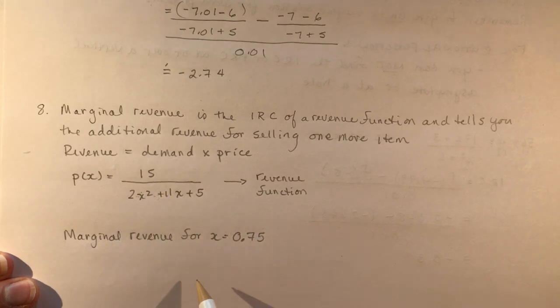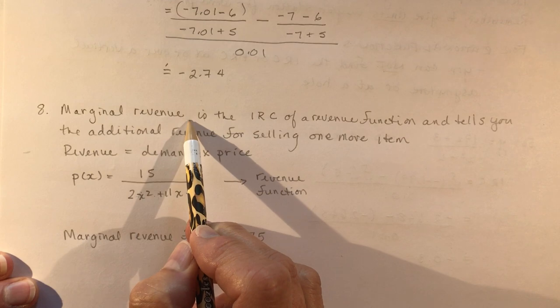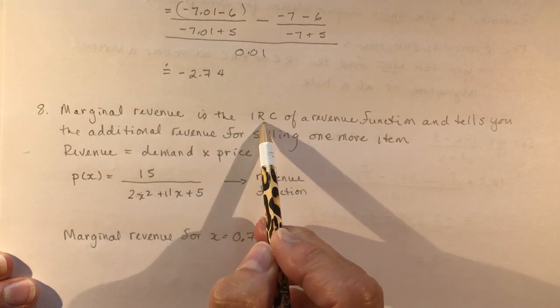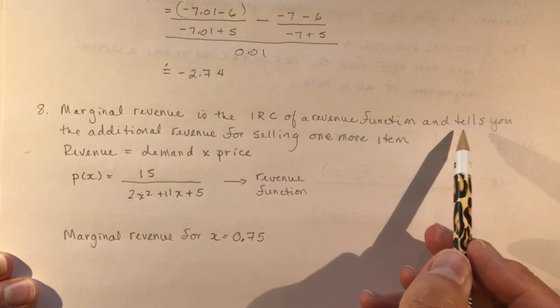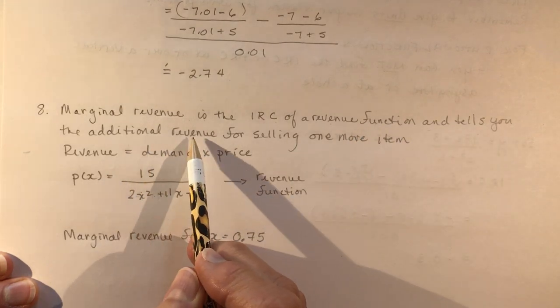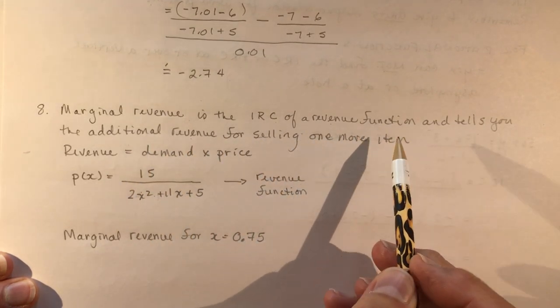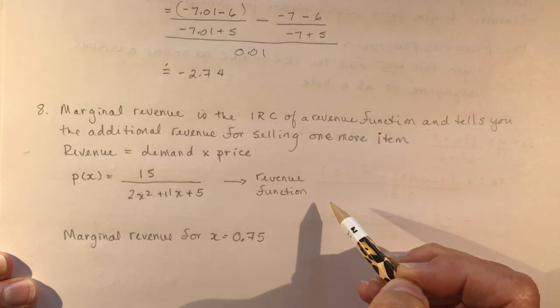So they want you to find out what the revenue function is, and what is the marginal revenue at two different points. I'll do them at one. So marginal revenue is the instantaneous rate of change of a revenue function, and tells you the additional revenue for selling one more item.